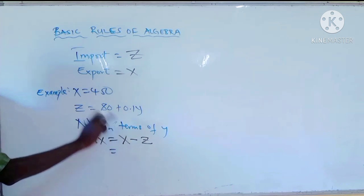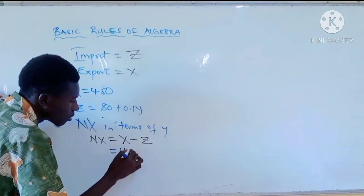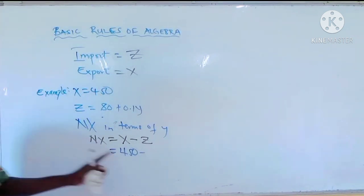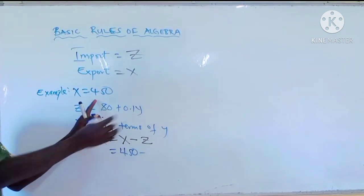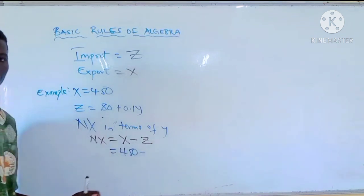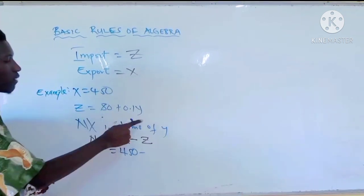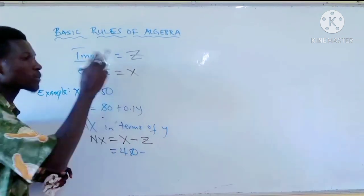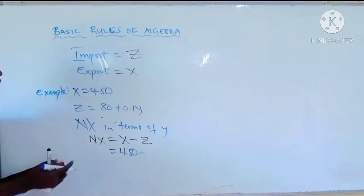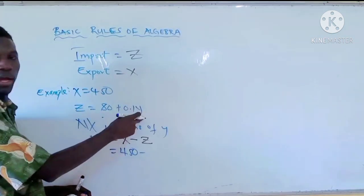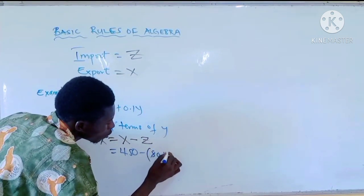From the formula, X (export) is 450. We maintain the minus sign, and the import Z is 80 plus 0.1Y. Because the import has a constant and a variable, we must put it in brackets: 450 minus (80 plus 0.1Y). You must always use brackets when you have a constant and a variable, otherwise the minus sign will only affect 80 and not 0.1Y.